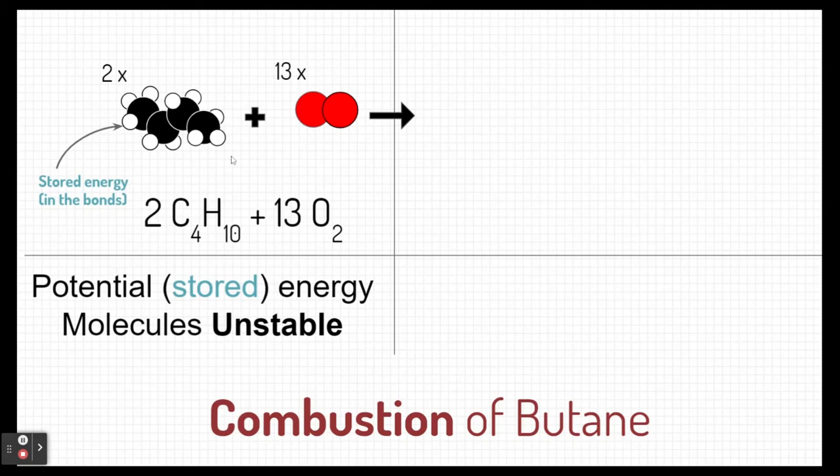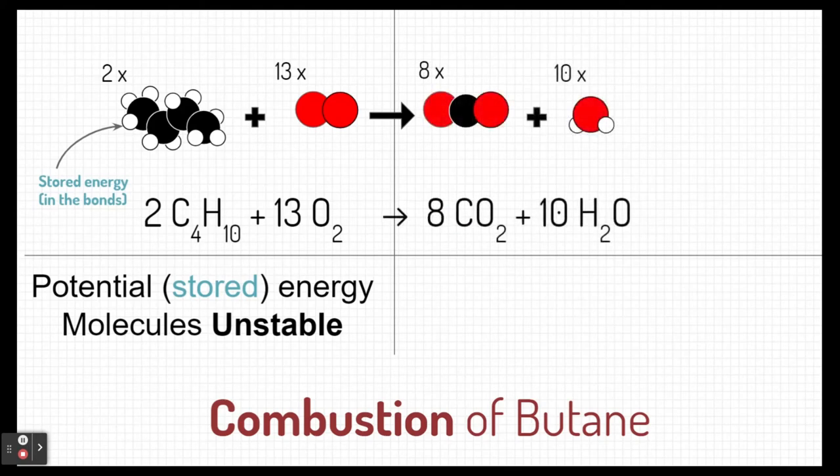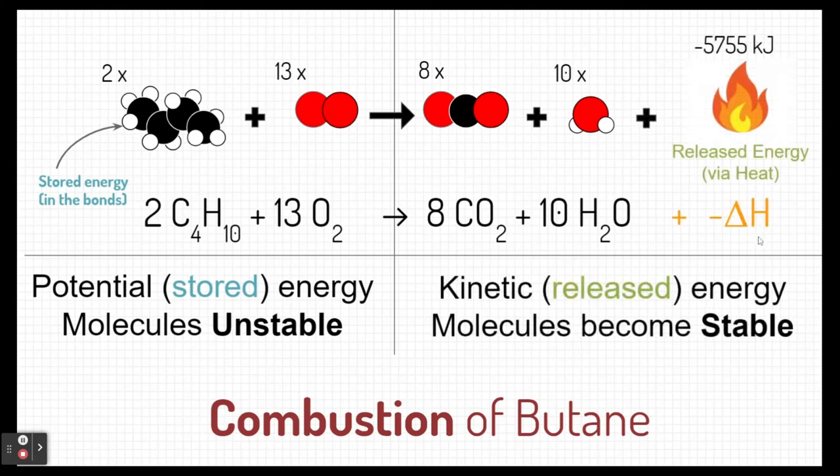Now these particles right now have stored energy. That butane is stored in a liquid form, and these molecules are typically unstable in this state. They don't want to stay in this state, and they're very easily changed to a different state. When we light that butane on fire, these molecules change. They rearrange themselves to form carbon dioxide and water. Not only do they do that, they release that energy that was stored in butane in the form of heat. So this released energy allows these molecules to calm down. They become more stable forms of carbon dioxide and water.